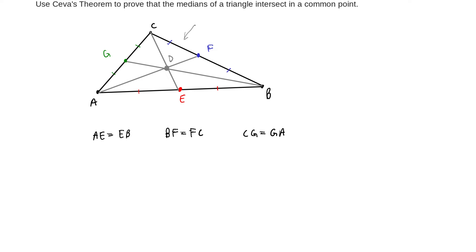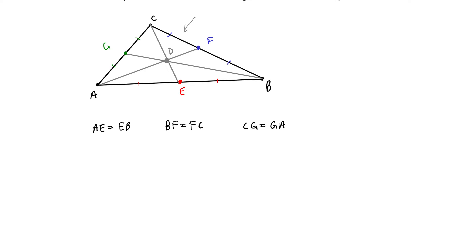So once we now get to Ceva's theorem, Ceva's theorem says that we should take the ratios of these portions of the side length and then multiply them all together. So we have AE divided by EB times BF divided by FC times CG divided by GA. And this we need to now compute. But look at what we have.